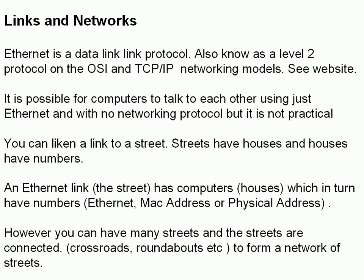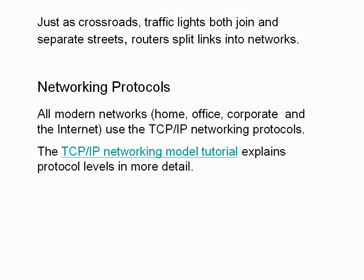We can liken networks to streets. A street has houses and houses have numbers. So in Ethernet terms, an Ethernet link is the street; the computers are the houses which have numbers — those are the MAC addresses, or physical addresses. If you've got lots of streets, you join them together using crossroads, roundabouts, and traffic lights to form a network of streets. The streets themselves have addresses, but Ethernet doesn't have an address for the streets, so we need another addressing scheme on top — the network layer addressing which comes with the IP protocol. Just as crossroads and traffic lights join and separate streets, we have routers on a TCP/IP network that split Ethernet links into separate networks.